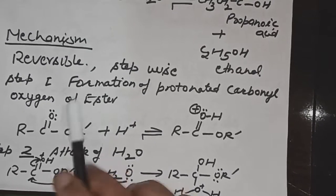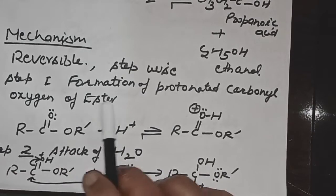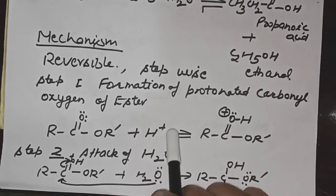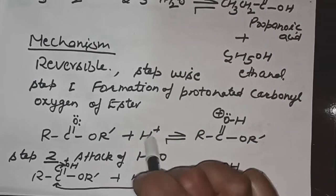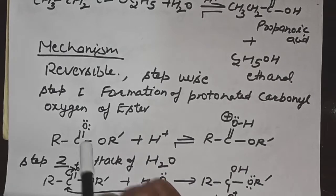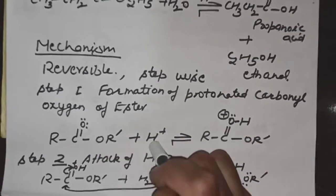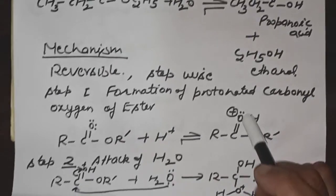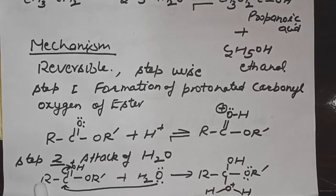Step 1 is the formation of protonated carbonyl oxygen of the ester. Since the reaction takes place in the presence of acid, the acid attacks first. The H+ ion attacks the carbonyl oxygen because oxygen has two lone pairs of electrons and H+ is electron deficient. When H+ attacks the carbonyl oxygen, the oxygen acquires a positive charge. This reaction is reversible.